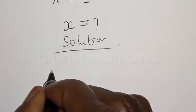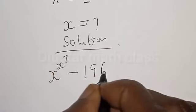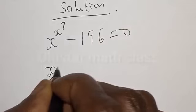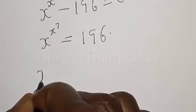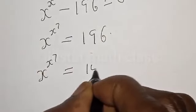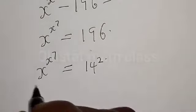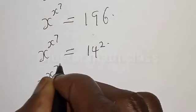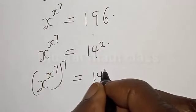We have the given equation: s raised to power s raised to power 7, minus 196, equals 0. Therefore, s raised to power s raised to power 7 is equal to 196. Now, 196 is 14 squared. So we multiply everything by raising to the power 7: s raised to power s raised to power 7, multiplied by raised to power 7, is equal to 14 squared multiplied by the power of 7.